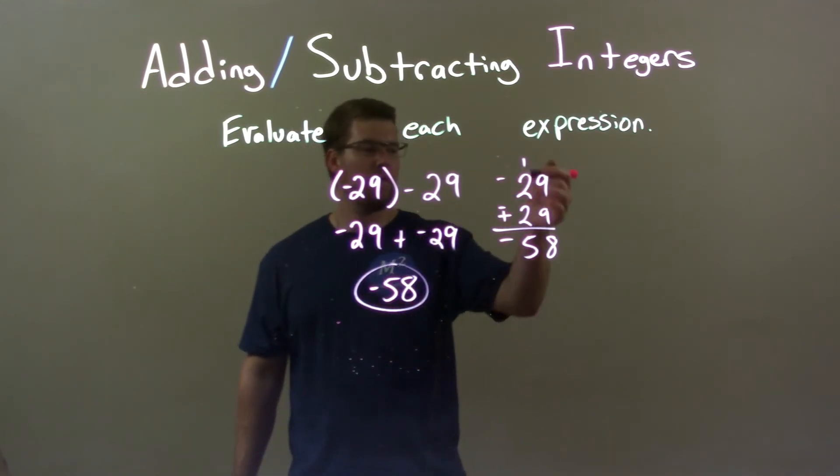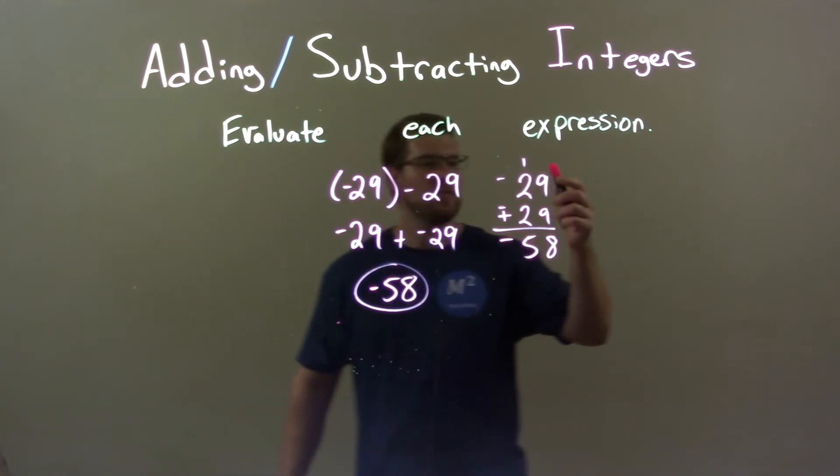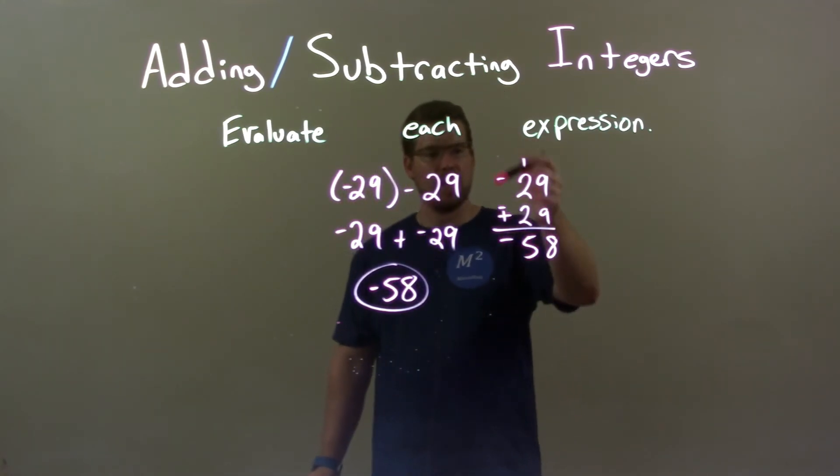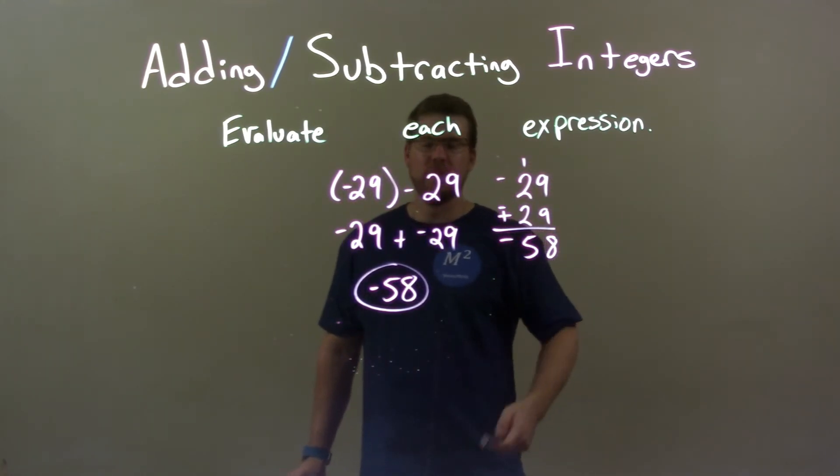I know I can add both of them together and keep the negatives going. So 29 plus 29 is 58, keep the negatives going, and we have negative 58. So negative 58 is our final answer.